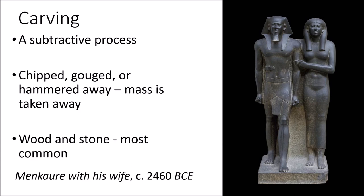One major process when it comes to art and sculpture is carving, and this is a very ancient process. When it comes to this technique, you have to figure out some way to remove mass — you might have a piece of stone and you're chipping or gouging it away with a hammer and a chisel. Stone and wood are typically preferred, mainly because those last for quite a long time.